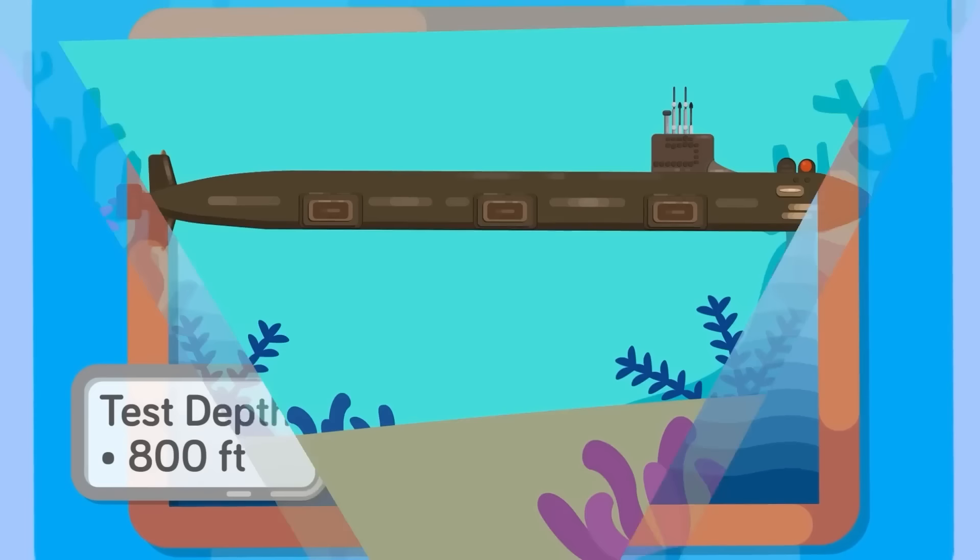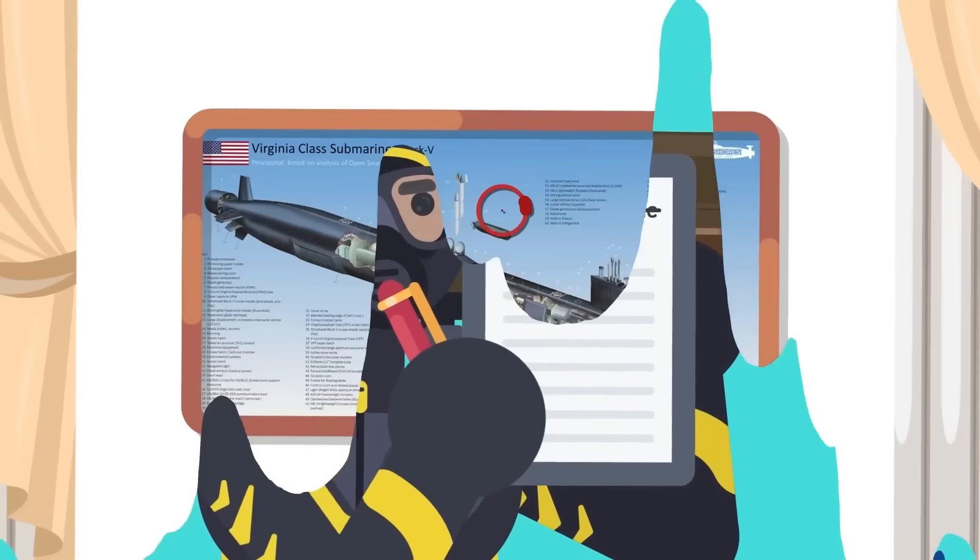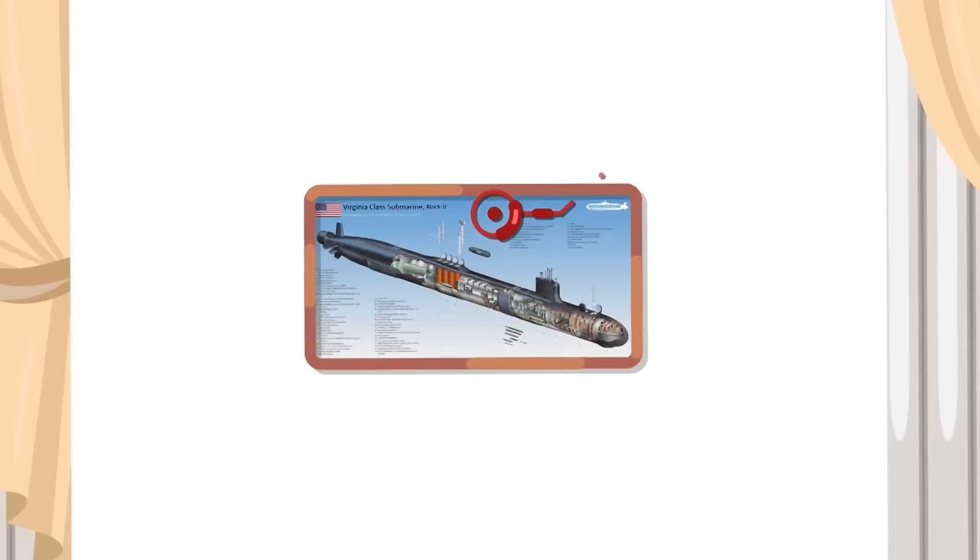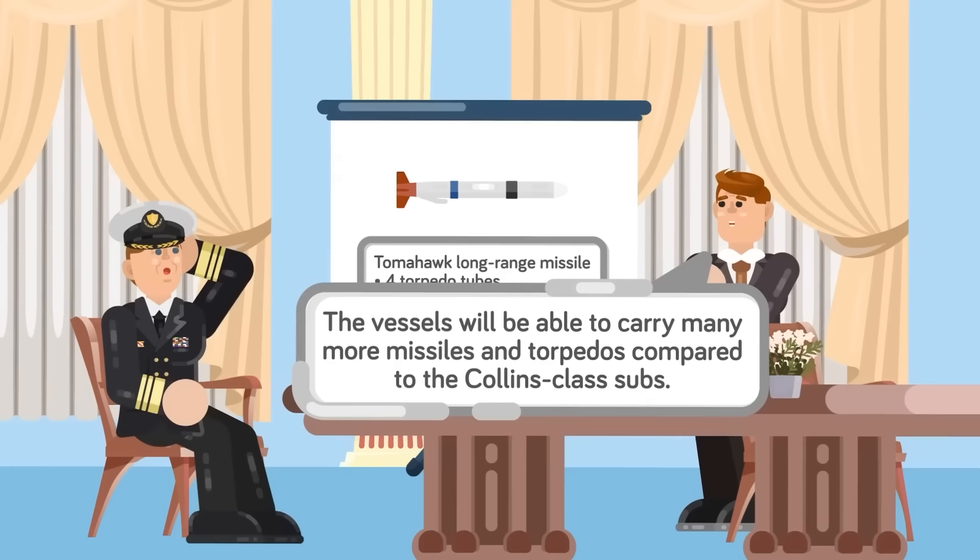We don't know exactly what type of armaments the new nuclear-powered submarines will have, but it is not out of the realm of possibility that the vessels will contain a complement similar to the Virginia class subs, minus the nuclear ballistic missiles. This means the Australian subs could have VLS anti-ship missiles or even Tomahawk long-range missiles for strikes against land targets. There will also probably be at least four torpedo tubes, and the vessel will be able to carry many more missiles and torpedoes than the Collins class subs. When all is said and done, the nuclear-powered submarines that AUKUS is developing will pose a huge military threat to China.